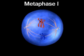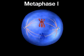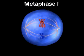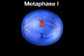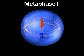During metaphase I, tetrads line up on the equator of the spindle.